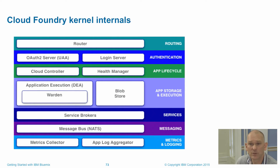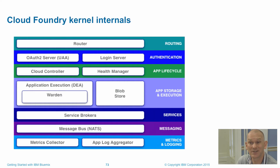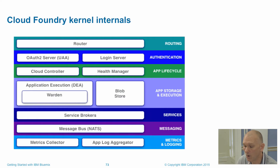After the app lifecycle, we have storage and execution — this is the place your application actually runs. It uses a technology called Linux containers. Your application runs as part of a container within this layer. When you create and stage your application, we store that in the binary store. Every time you want to talk to or bind a service to your application, we have the service broker layer. All of the various components talk to each other using a messaging bus, which is how we can scale from a single machine right across a very large deployment.